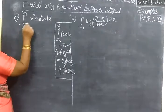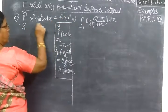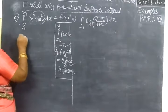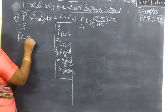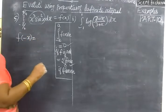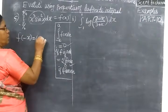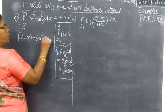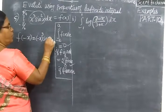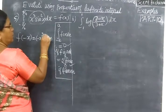Here is f(x). Now take f of minus x. Wherever x comes, we are writing minus x. So minus x cube, then sin of minus x whole square.